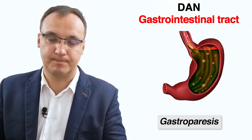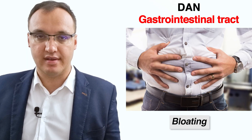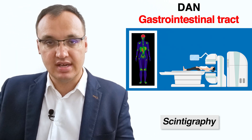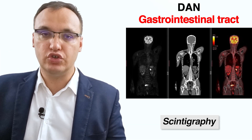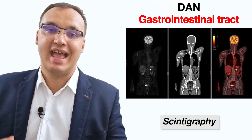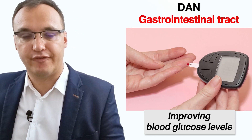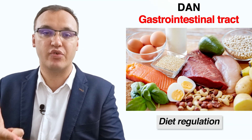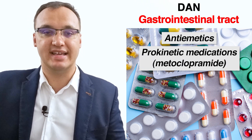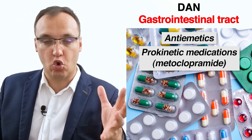Gastroparesis includes symptoms of nausea, vomiting, early satiety, bloating, and upper abdominal pain. Diagnosis is based on delayed gastric emptying seen on scintigraphy — a scan that detects the time it takes for food to move from the upper digestive tract downwards, identifying upper gastric motility problems. Primary treatment includes improving blood glucose levels, diet regulation, and medicines for symptoms such as anti-emetics against vomiting and nausea, and pro-kinetic medications like metoclopramide to promote bowel movement.